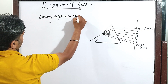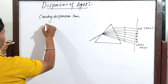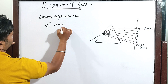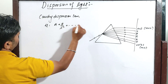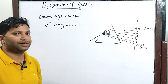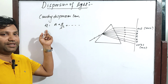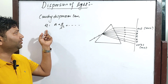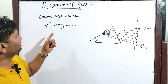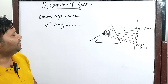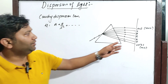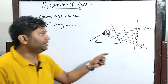Cauchy's Dispersion Law states: mu is equal to A plus B divided by lambda squared, where A and B are the Cauchy constants, mu means the refractive index of the material of the prism, and lambda is the wavelength. This relation gives the relation between refractive index and wavelength — so for each color, wavelength gives a different refractive index.